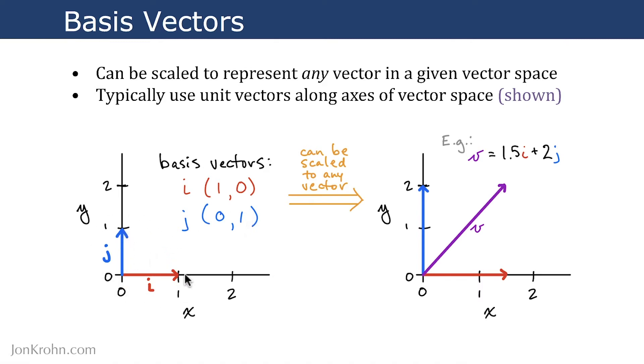So these two vectors together, these basis vectors i and j, can be scaled to any vector in the two-dimensional space. So for example, this vector v, which runs from the origin to this point here of x equals 1.5 and y equals 2, that vector v can be described by scaling i and j and adding them together. So 1.5 times i plus 2 times j is equal to that vector v.